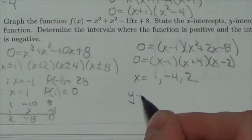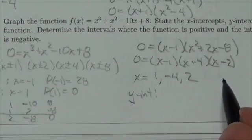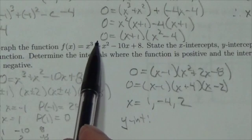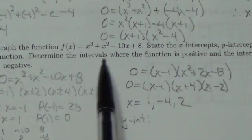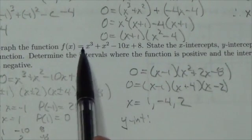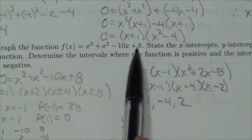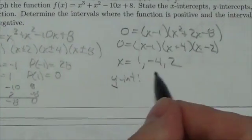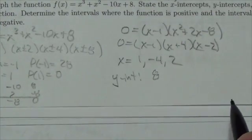Now the y-intercept is just going to occur when x is equal to 0. So if x is equal to 0, this term disappears, this term disappears. Basically any term that has an x disappears, and we're just left with 8. And that is the significance of the constant term. That is going to be the y-intercept. So the y-intercept here is positive 8.